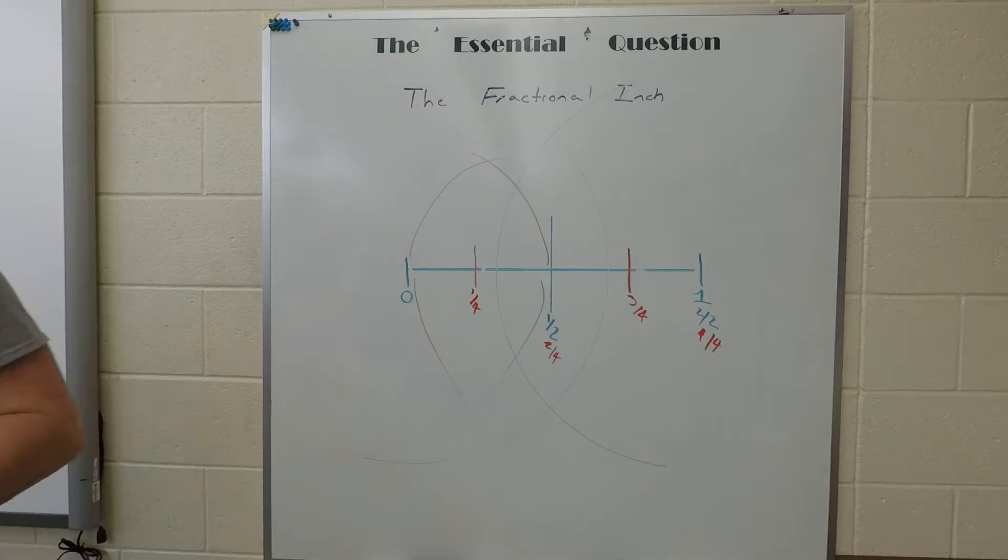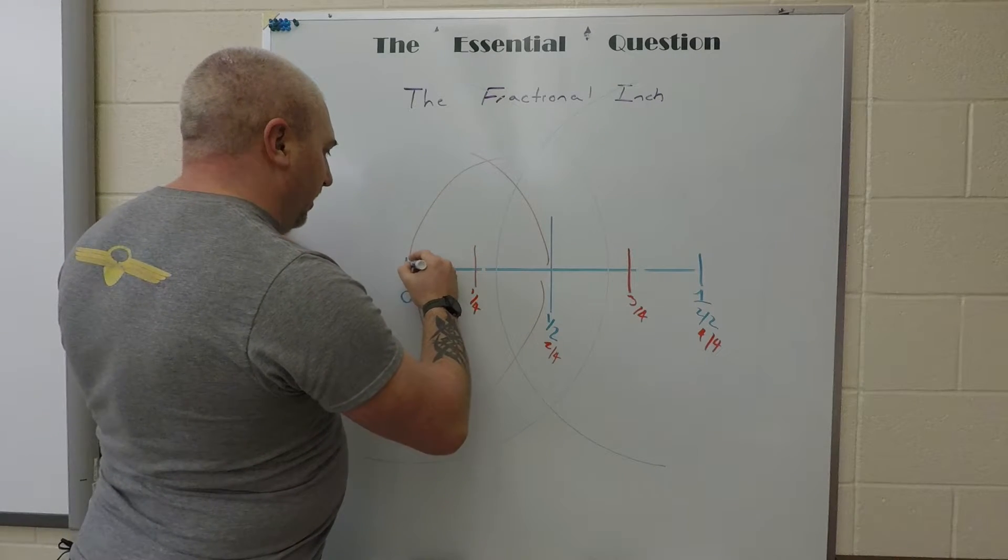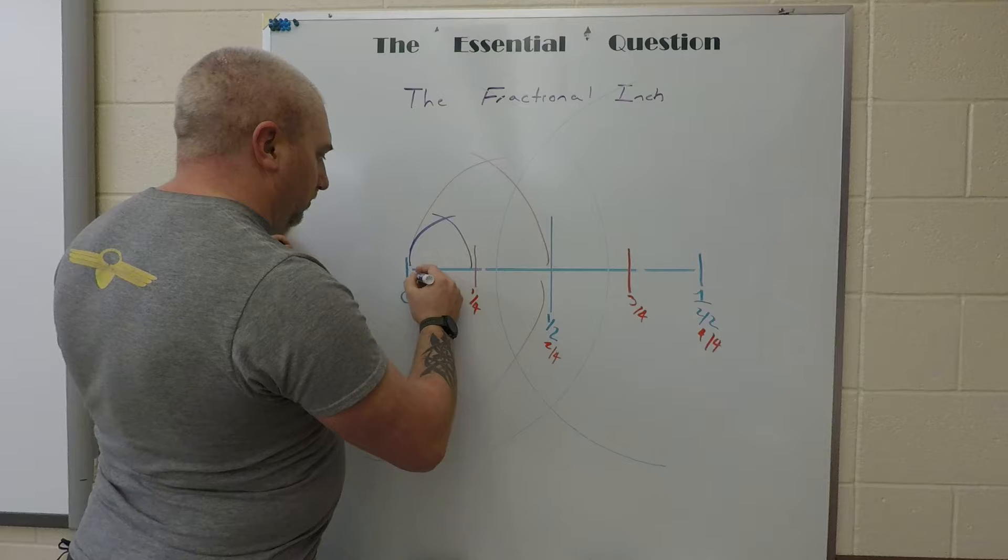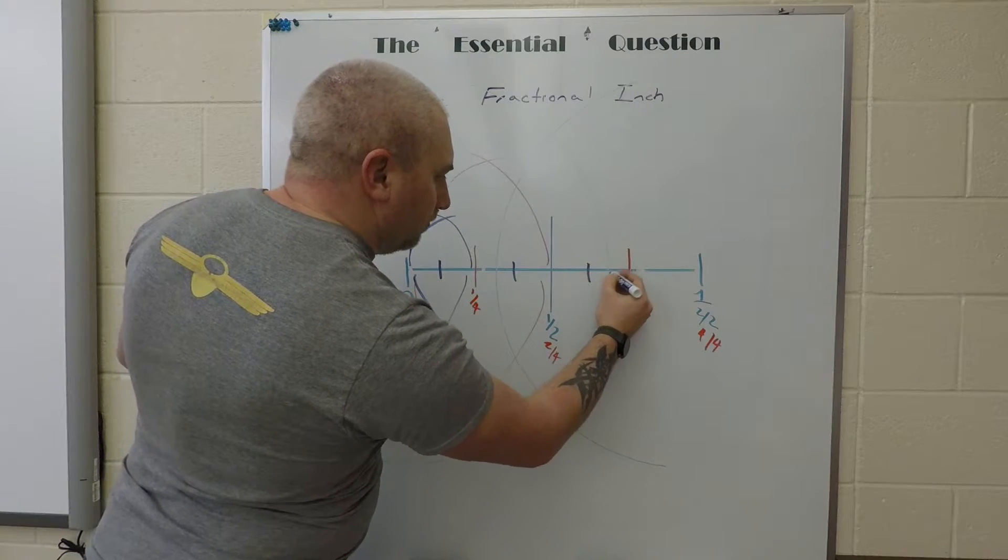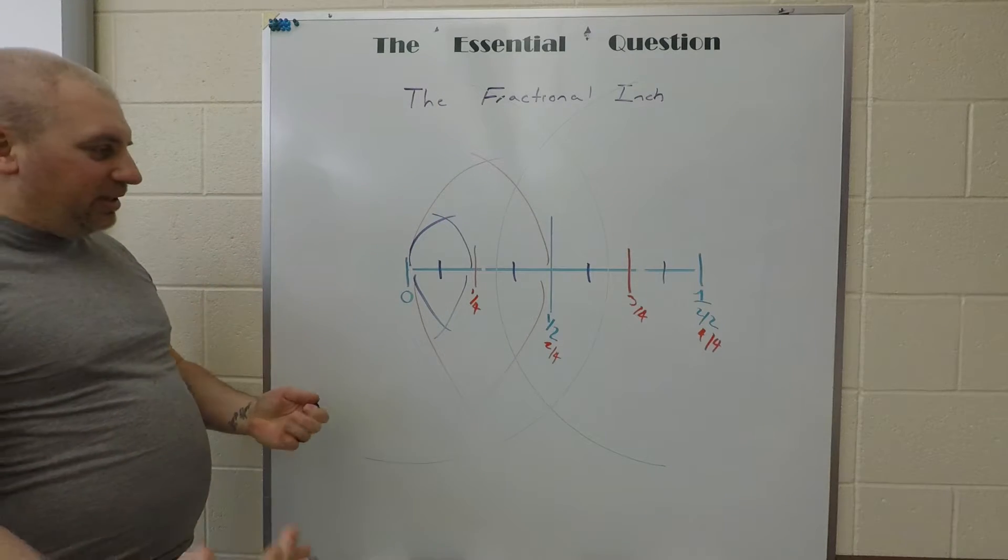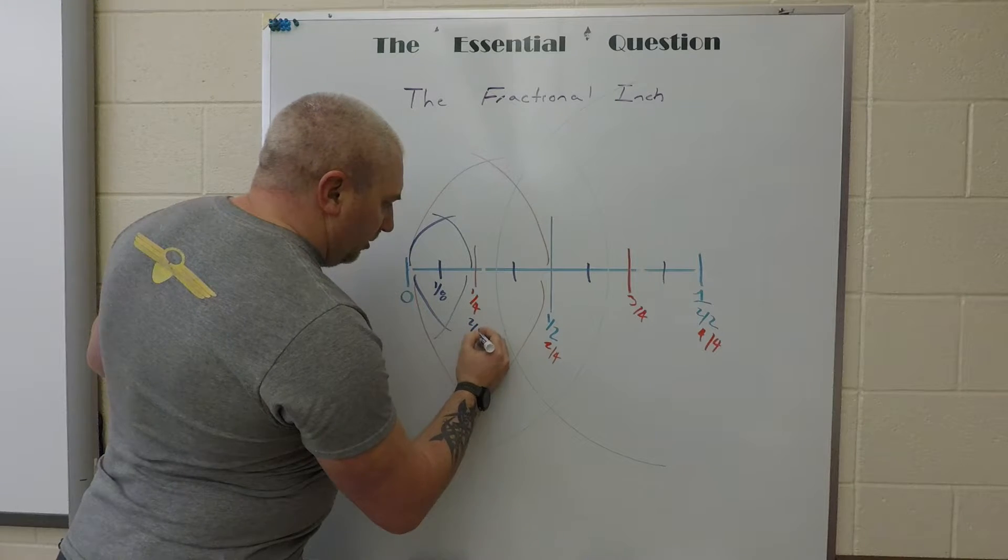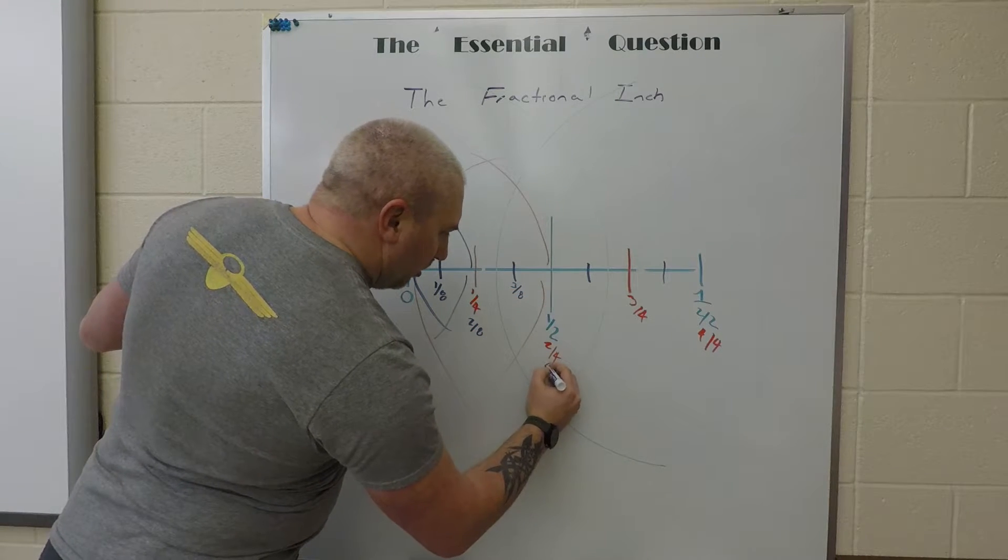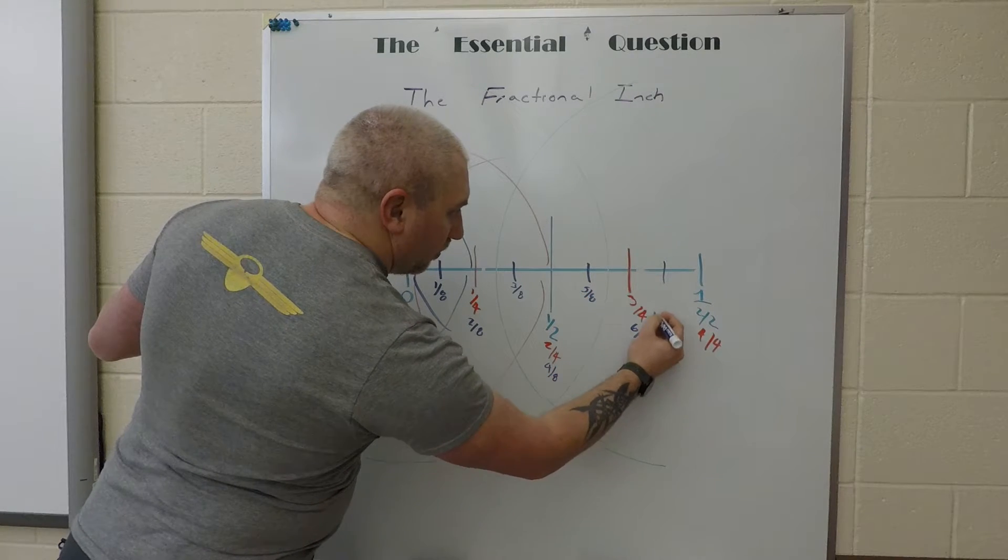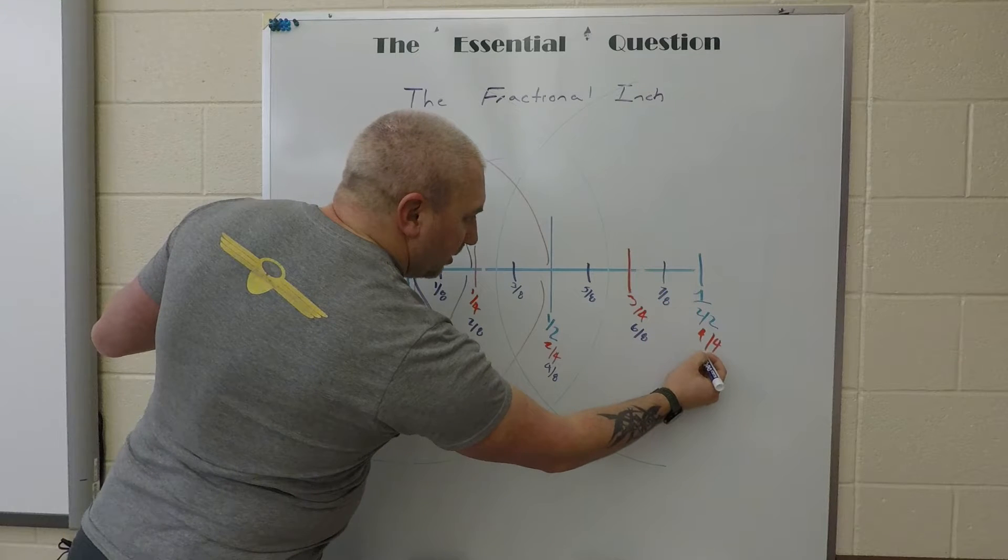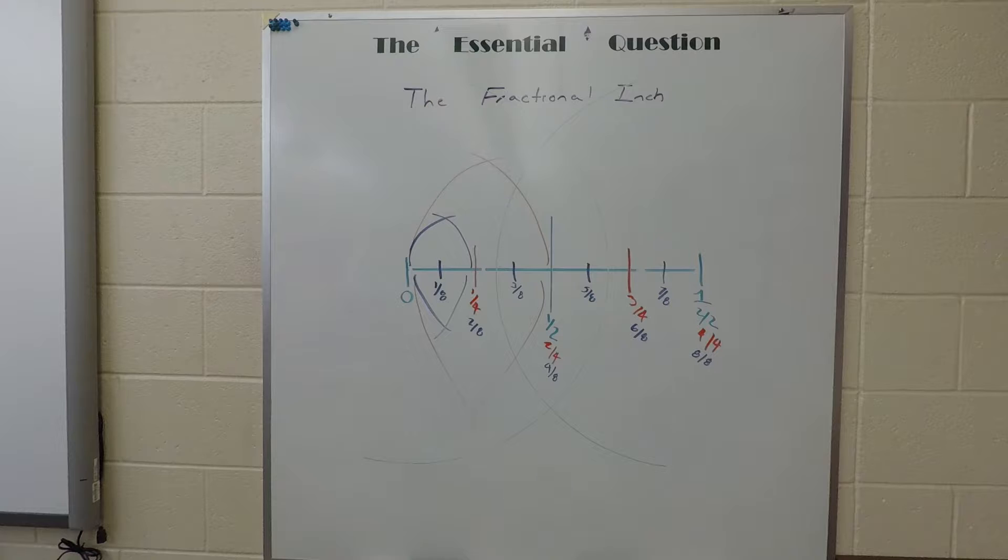And then the pattern begins to repeat. If we need something smaller, we divide the quarter in half again and split the inch yet again. That leaves us with eighths of an inch. So I've got one-eighth, two-eighths, three-eighths, four-eighths.